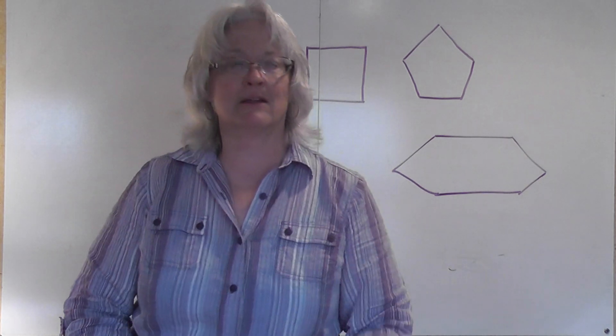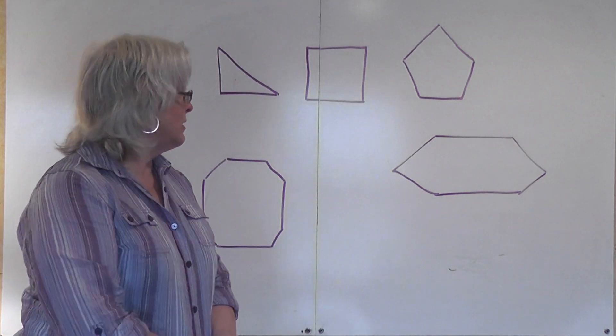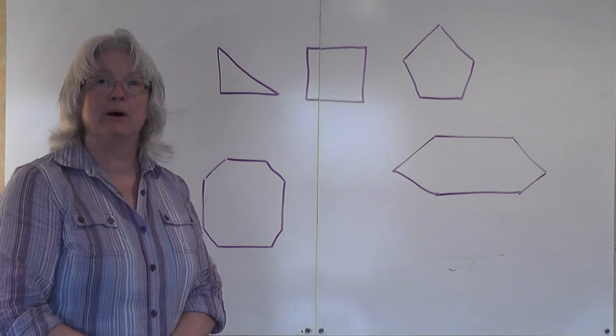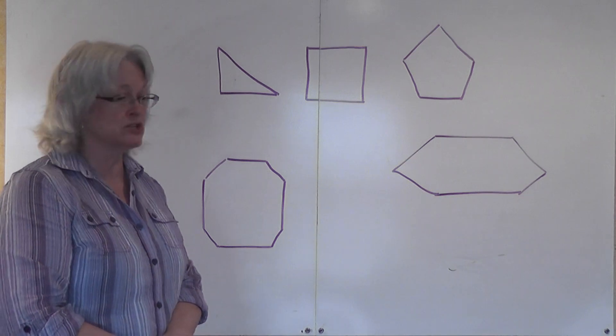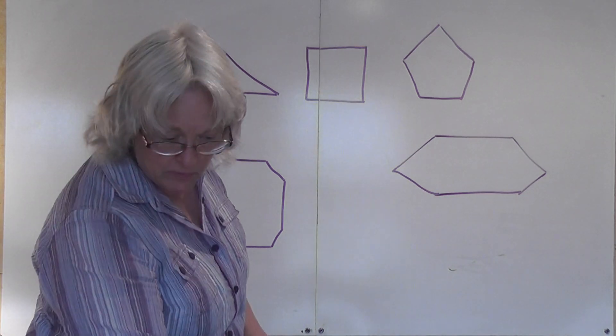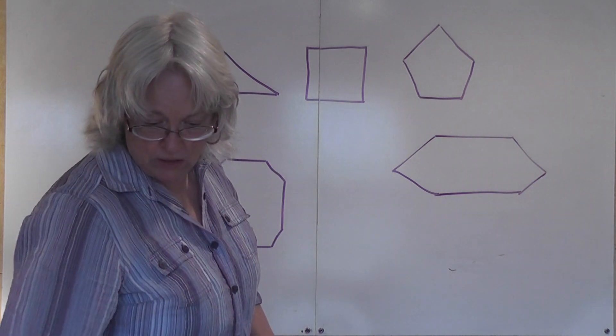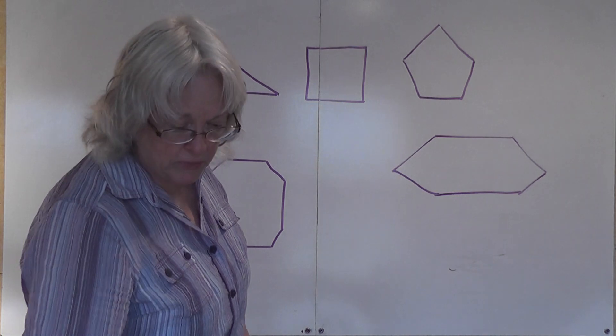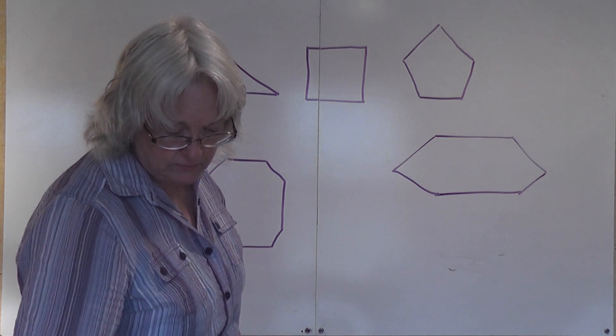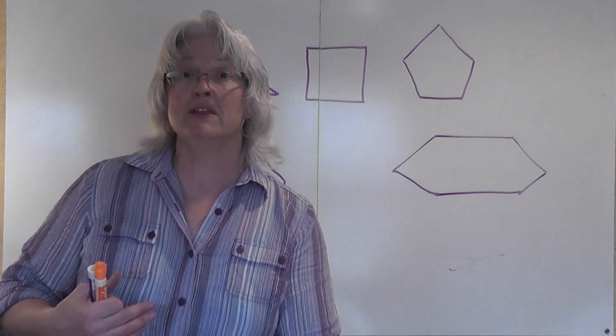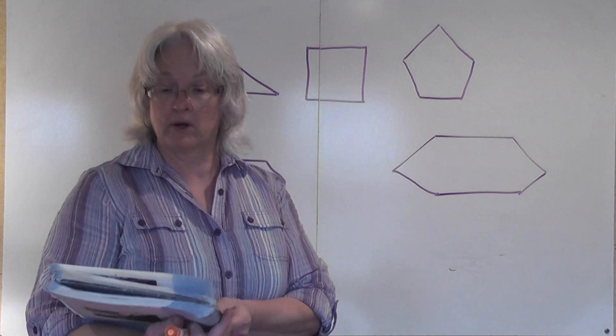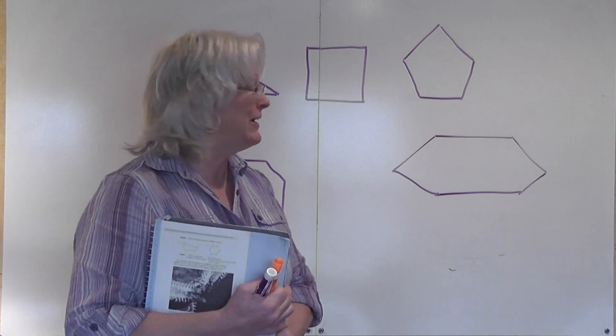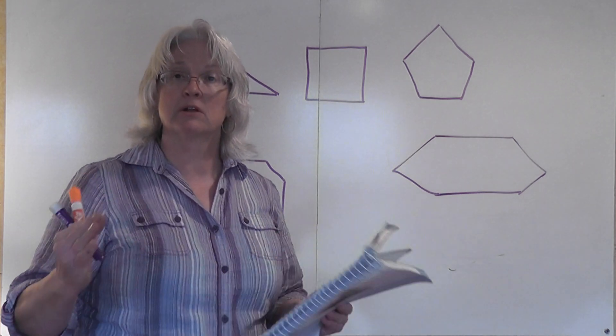We'll go ahead and get started on our lecture here. We are in Pre-Algebra for Christian Schools published by Bob Jones University Press, first edition. This is section 11.6, page 370. A closed plane figure made up of line segments is called a polygon.